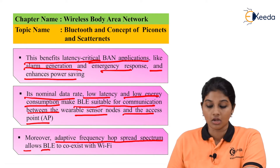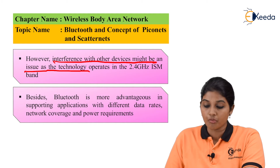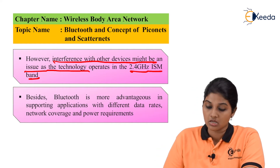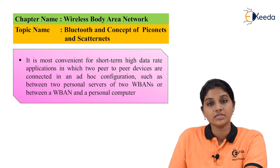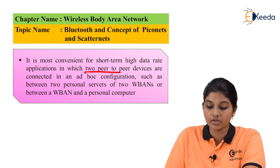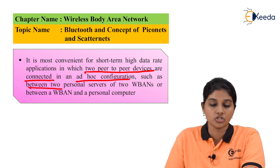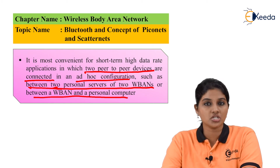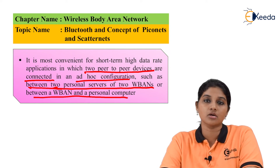The adaptive frequency hopping spread spectrum allows Bluetooth Low Energy to coexist with Wi-Fi. Interference with other devices may be an issue since the technology operates on the 2.4 GHz ISM band, where other technologies can interfere with BLE devices. Bluetooth is advantageous in supporting applications where different data rates, network coverage, and power requirements are needed. It is most convenient for short-range communication where low data rates are required and two peer-to-peer devices are connected in an ad hoc configuration.